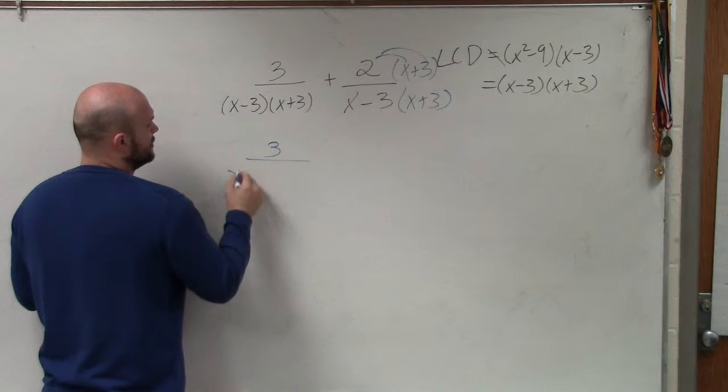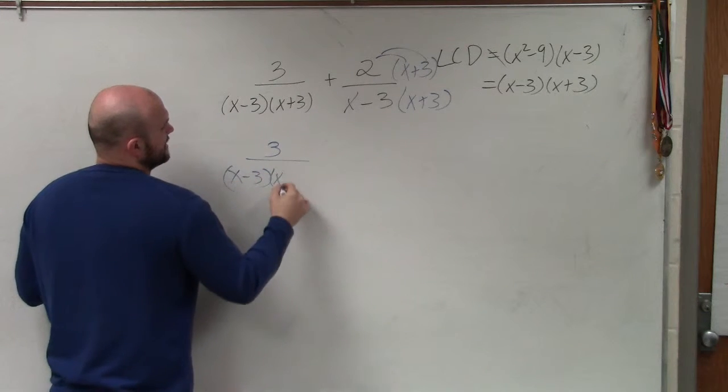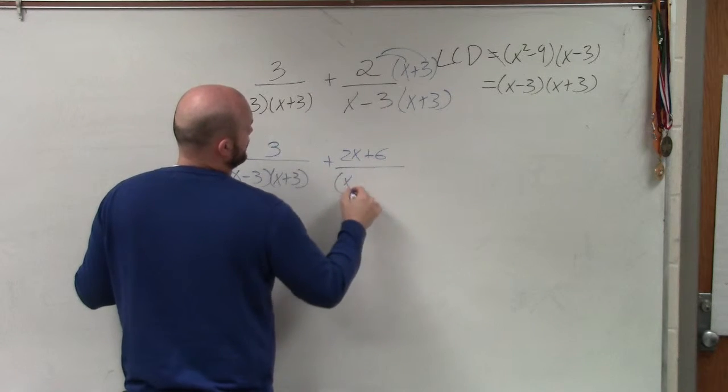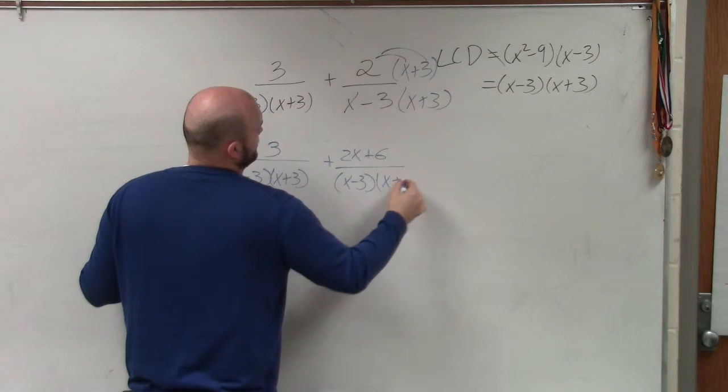And what I obtain is 3 over x minus 3 times x plus 3 plus 2x plus 6 over x minus 3 times x plus 3.